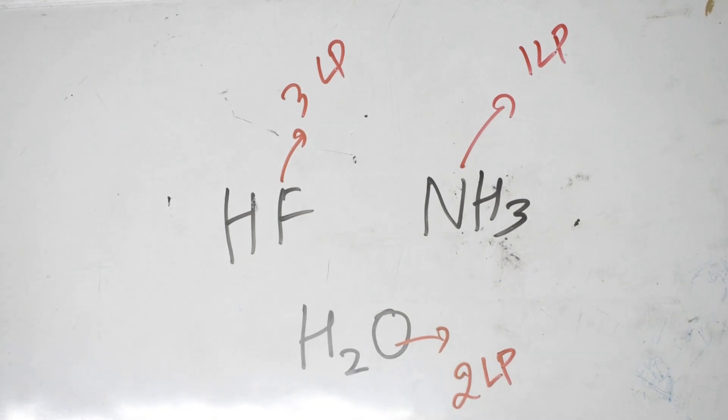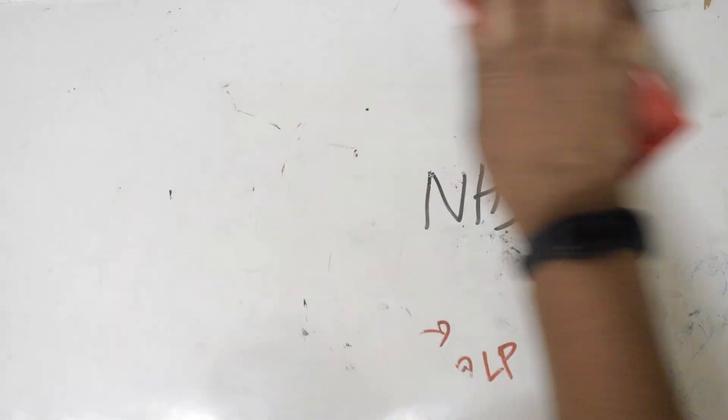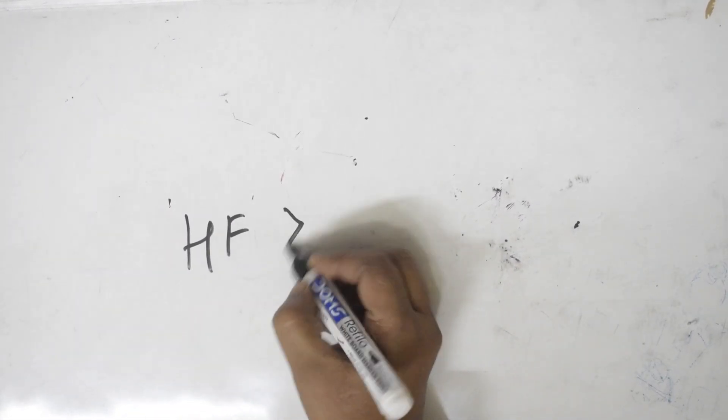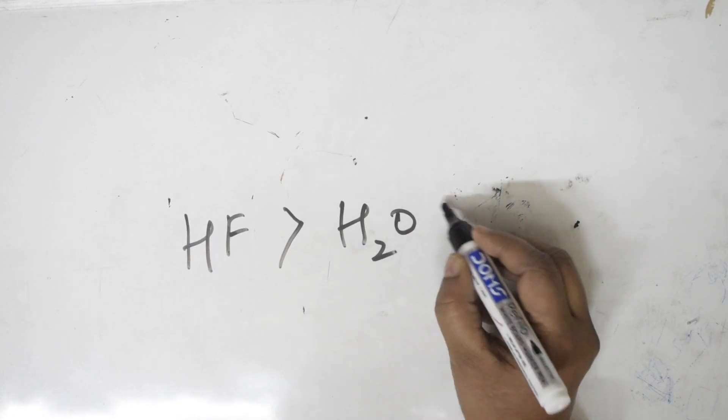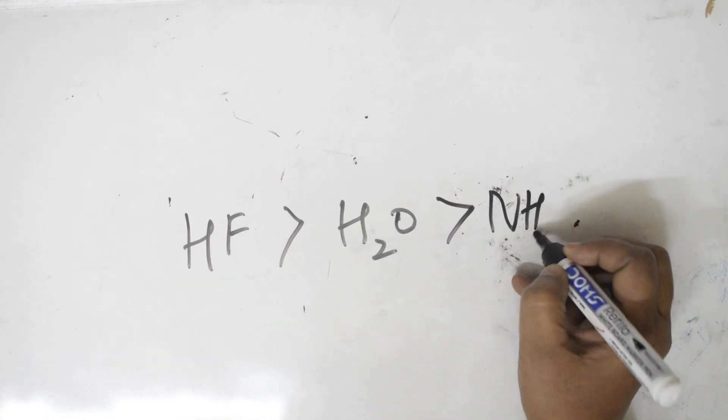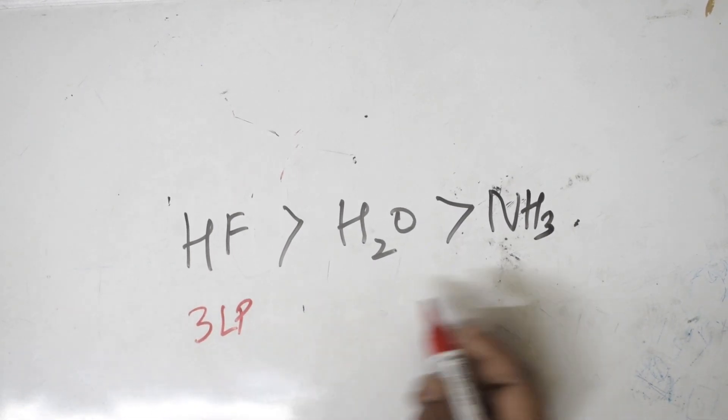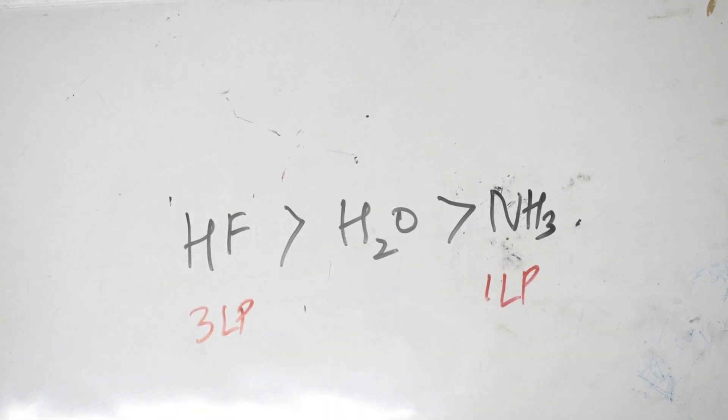Now see the trick. More number of lone pair of electrons means more dipole. That means among your dipoles, HF is having more dipole compared to water, more dipole compared to NH3. What is the reason? In this case three lone pairs, in this case one lone pair. Simple, easy.